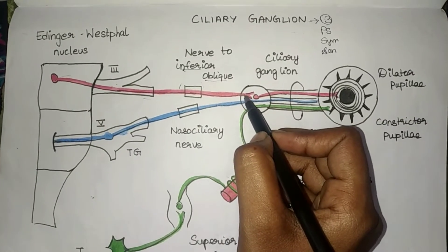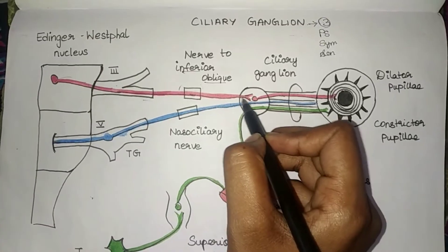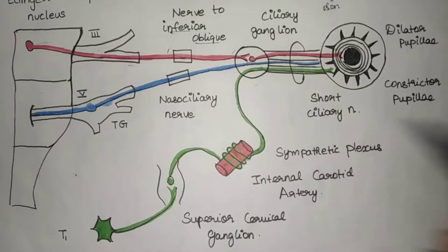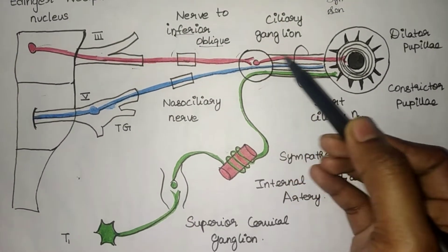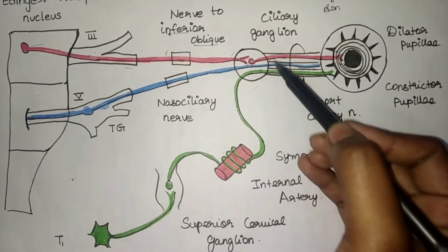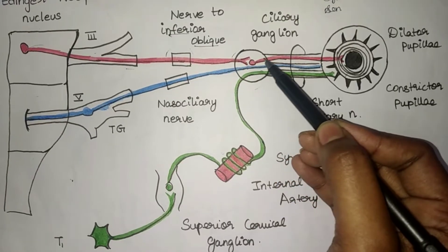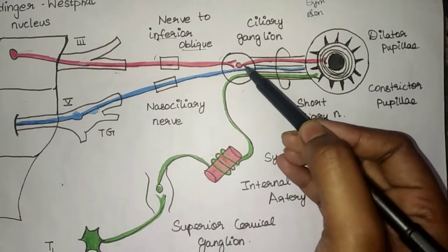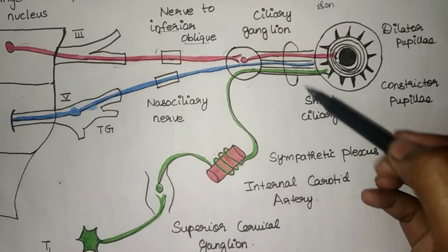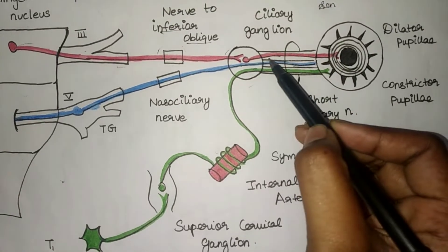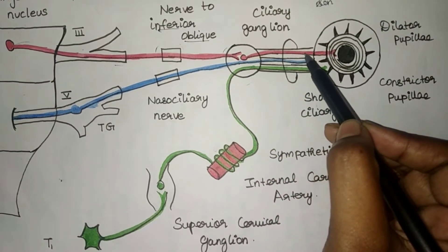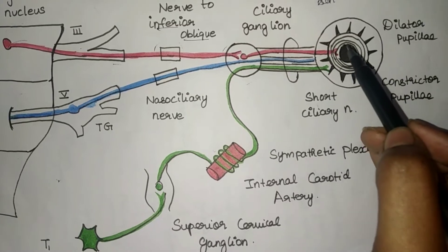These are the pre-ganglionic fibers entering the ciliary ganglion. From the ciliary ganglion, the post-ganglionic fibers travel as the short ciliary nerve.